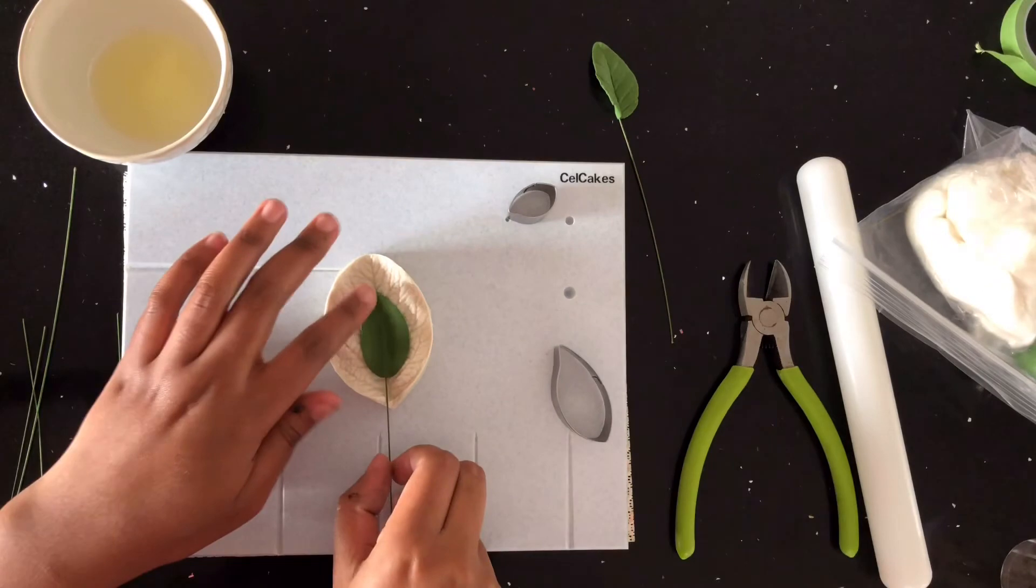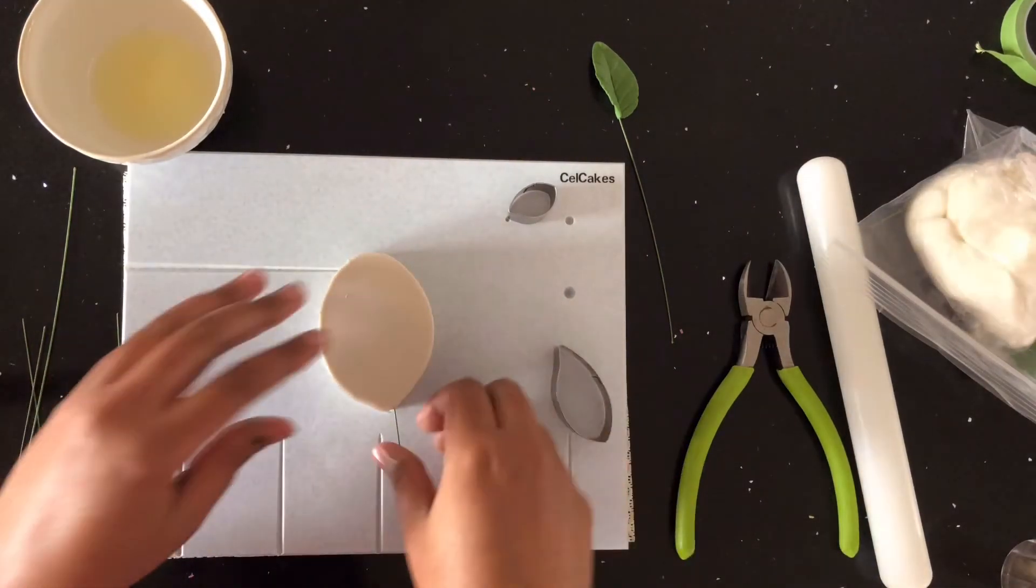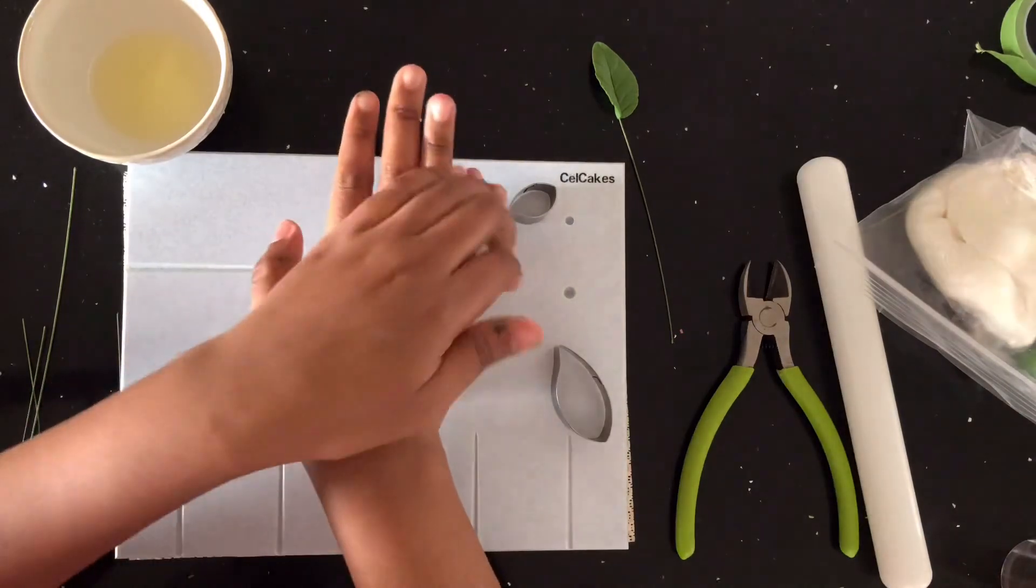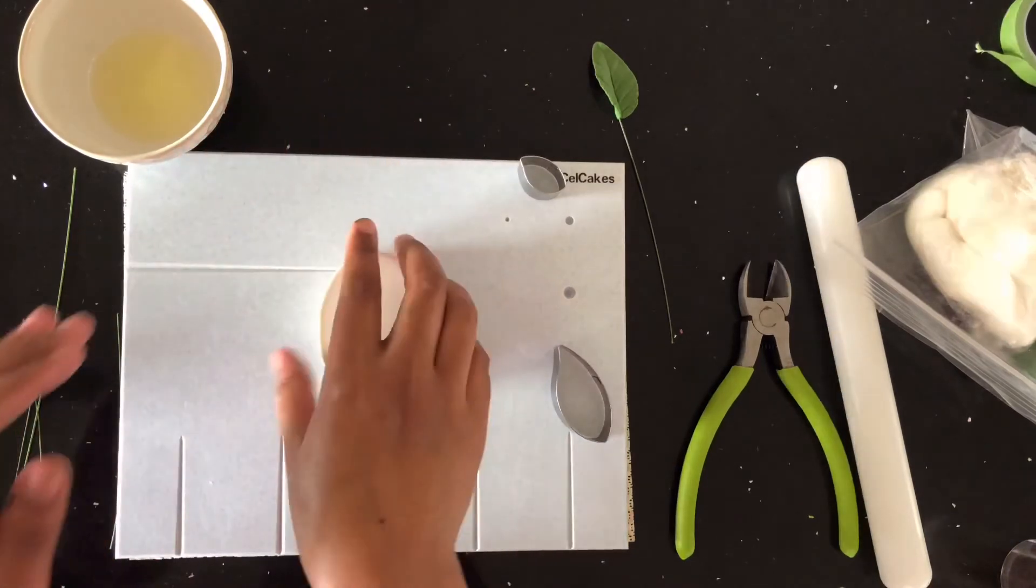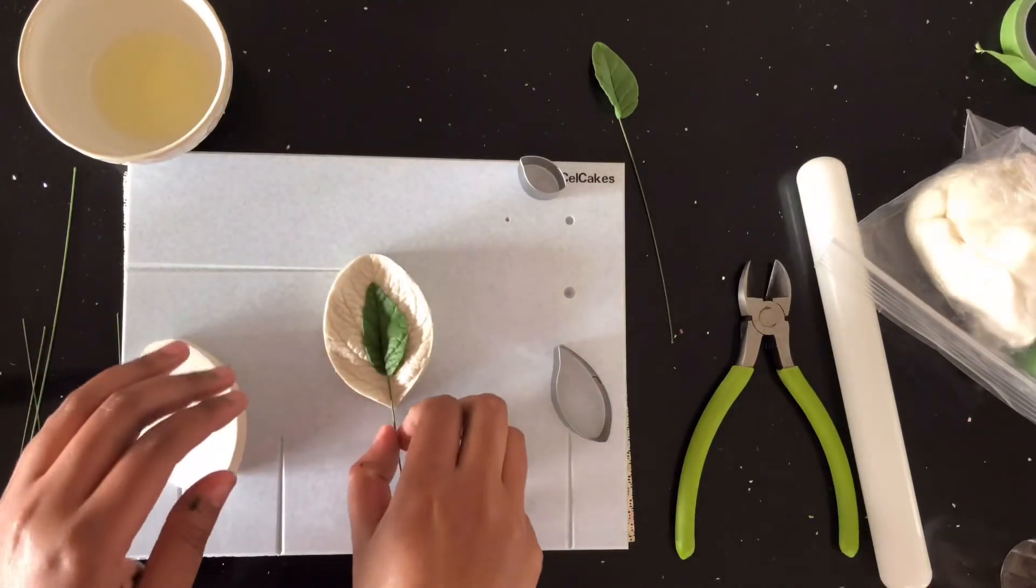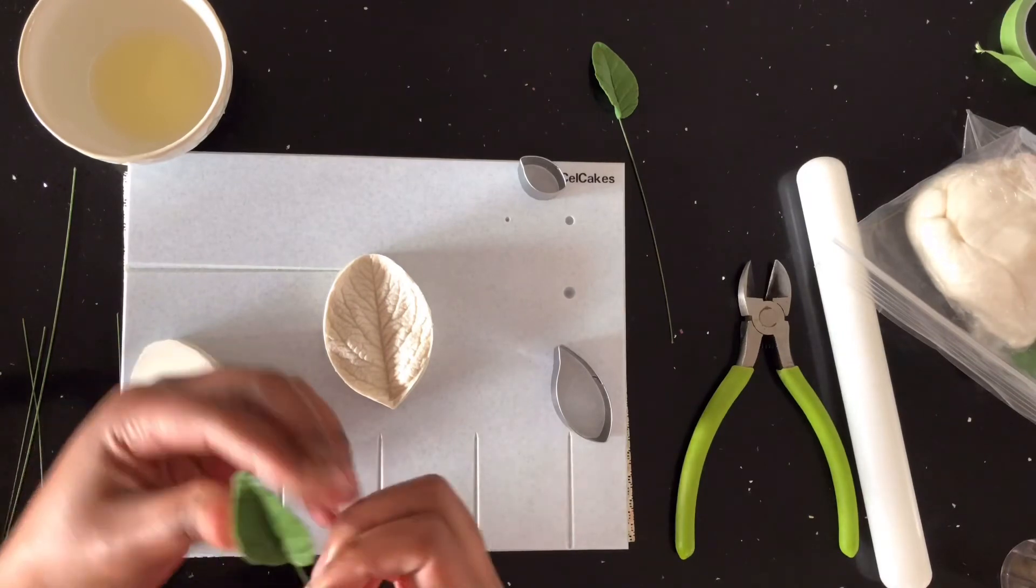Now you're going to vein your leaf. You're going to take your mold, it has a top and a bottom, and you're going to insert it. Make sure that it's lined up with the center of the mold and you're going to press firmly. Firmly enough that your leaf is not going to bust through, but enough that you're going to get a nice impression on your leaf.